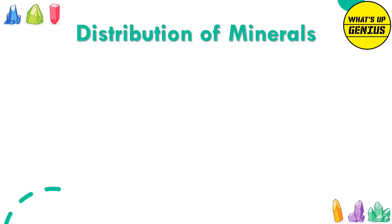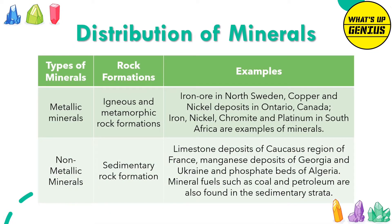Distribution of Minerals. Metallic minerals are found in igneous and metamorphic rock formations — for example, iron ore in North Sweden, copper and nickel deposits in Ontario, Canada, and iron, nickel, chromite and platinum in South Africa. Non-metallic minerals are found in sedimentary rock formations — for example, limestone deposits of the Causses region of France, magnesium deposits of Georgia and Ukraine, and phosphate beds. Mineral fuels such as coal and petroleum are also found in sedimentary strata.